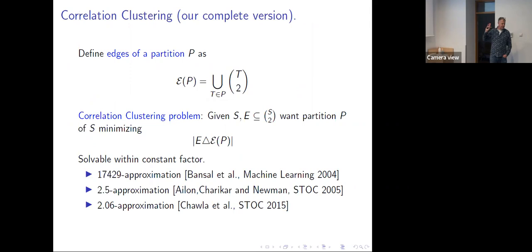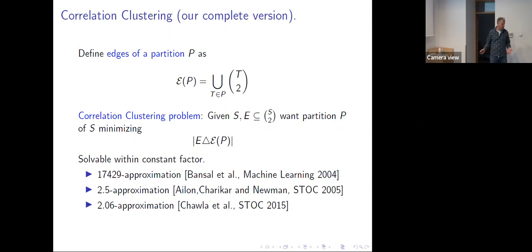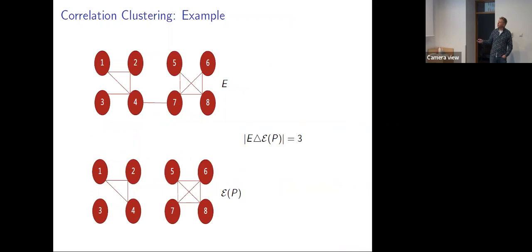To define it, first we talk about correlation clustering. We're trying to find some partition or clustering, and we add all the edges within each cluster so each cluster turns into a clique. The correlation clustering problem: we're given as input a set of edges, and we want the partition so that the symmetric difference between those and the input edge set is as small as possible. It's known how to do this within a constant factor — it started off being a big constant factor, now it has become smaller. Here's an arbitrary edge set, here's an approximation with three cliques, and the symmetric difference is three.